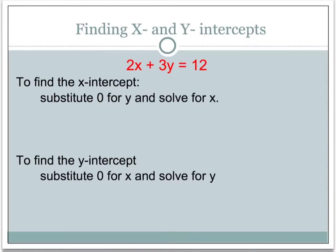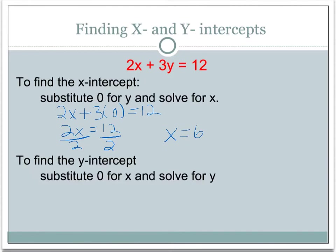So let's take a look at how you would find the x and y-intercepts. This equation is a linear equation written in standard form: 2x plus 3y is equal to 12. If you wanted to find the x-intercept, you would substitute 0 for the y-value and then solve for x. So I would substitute 0 in for y: 2x plus 3 times 0 is equal to 12. That leaves 2x equals 12, and dividing by 2, x is equal to 6. That is the x-intercept, and the coordinate point would be 6, 0.